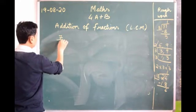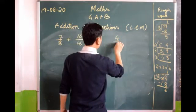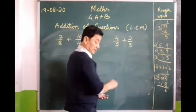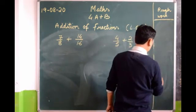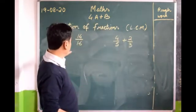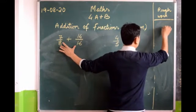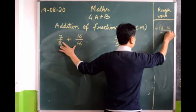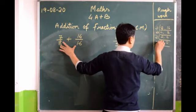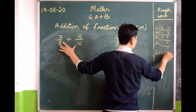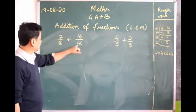Only two more sums: 7/8 plus 14/16. The denominators are different so we must find the LCM of 8 and 16. Which prime number can we use? 2. Continuing: 2 fours are 8, 2 eights are 16, 2 twos are 4, 2 twos are 4, 2 ones are 2. The prime factors are 2 times 2 times 2 times 2. Multiplying: 2 to 4, 4 to 8, 8 to 16. So the LCM of 8 and 16 is 16.